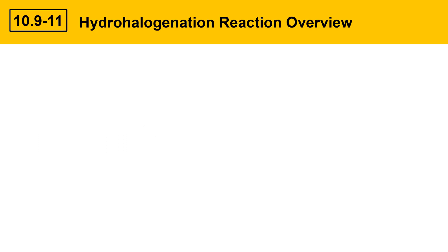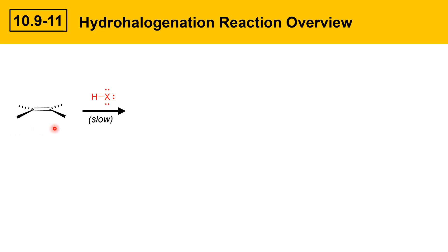This slide will cover an overview of hydrohalogenation reactions. This is a reaction between an alkene and HX, where X is equal to chlorine or bromine. Here I've drawn a generalized alkene where we're not really talking about any specific substituents on the alkene.